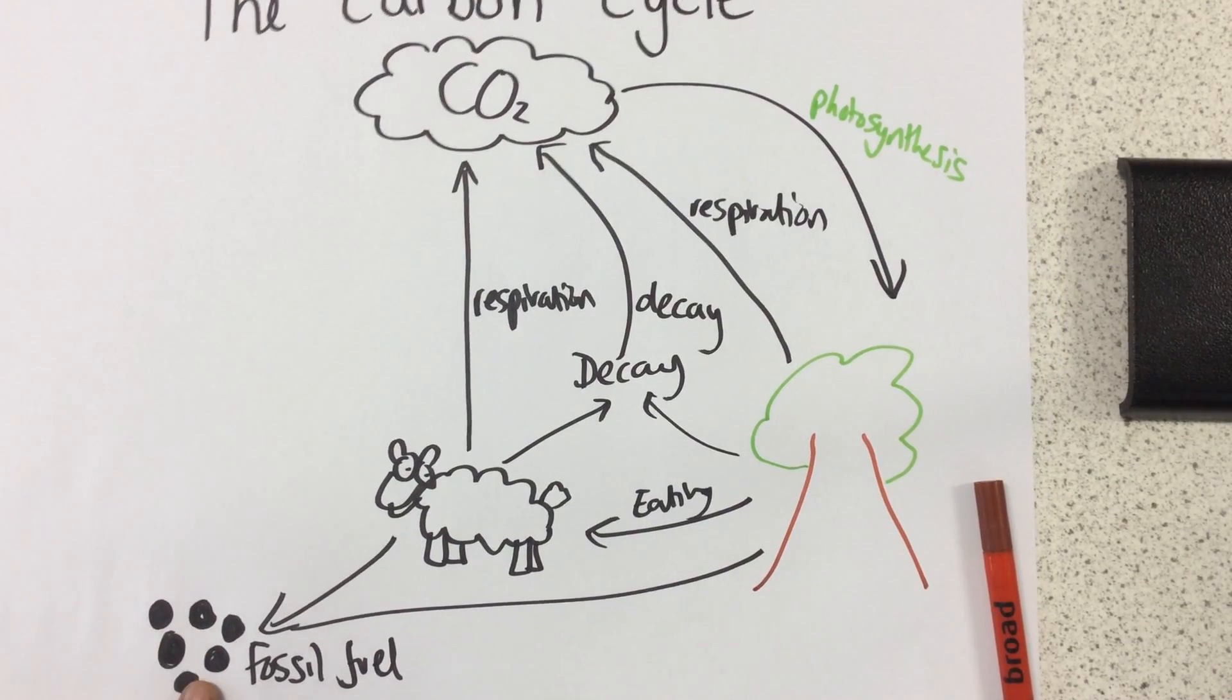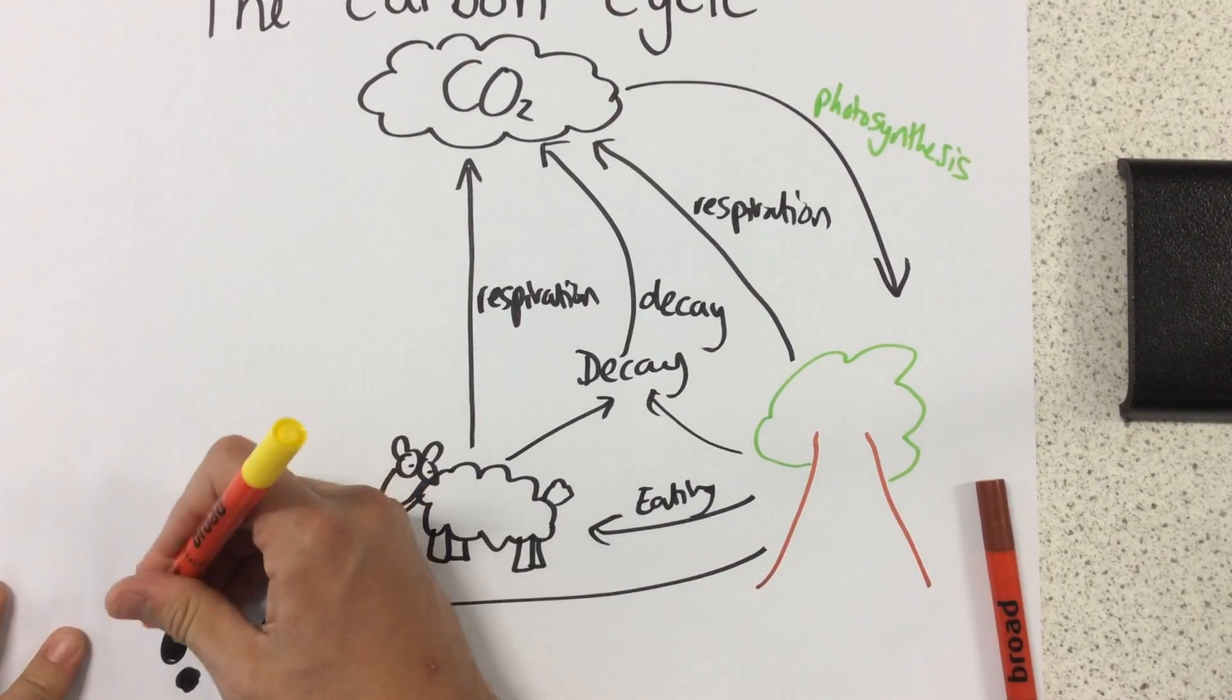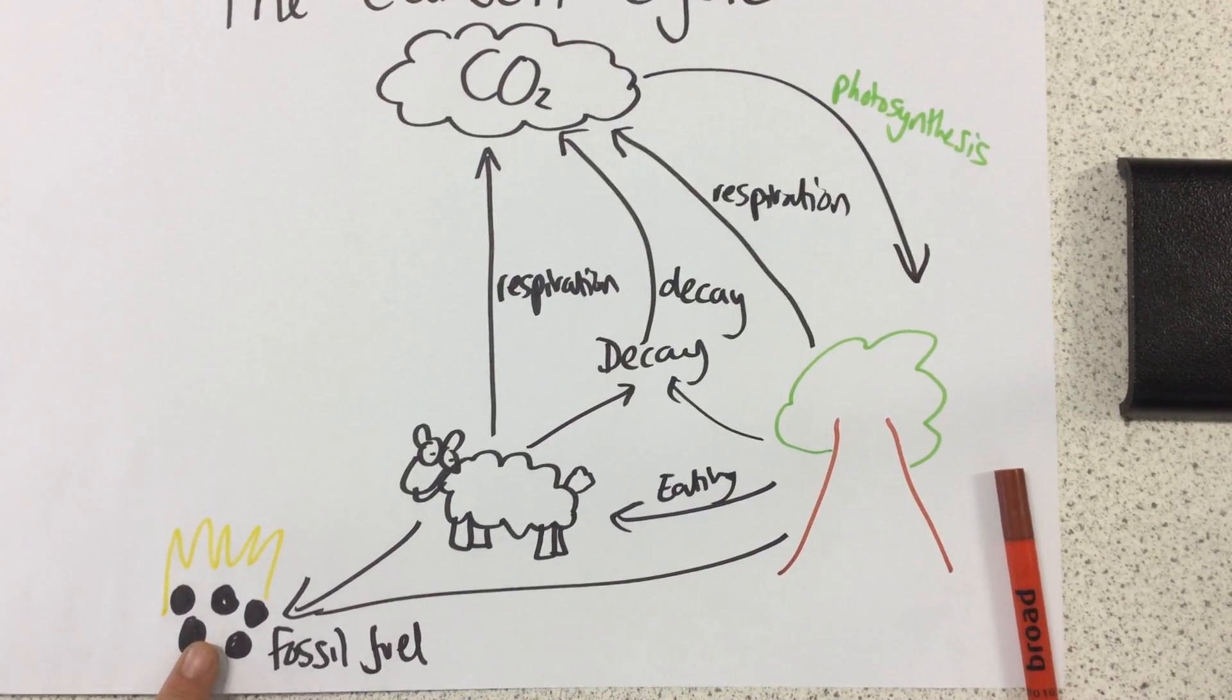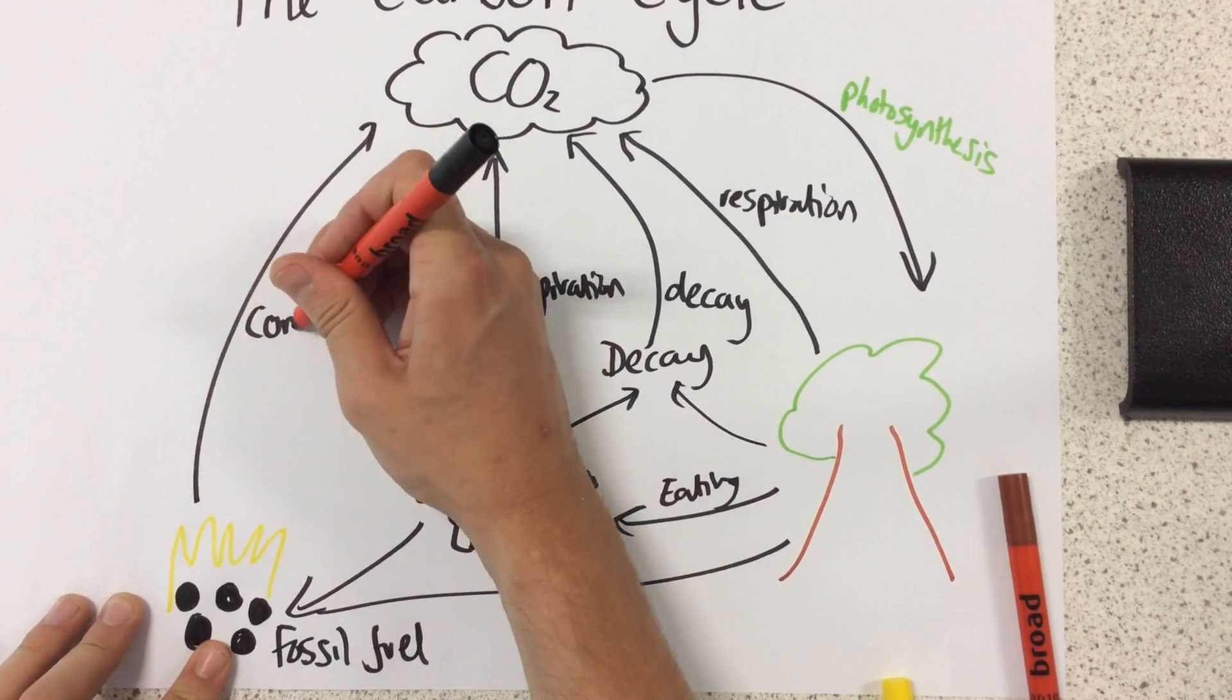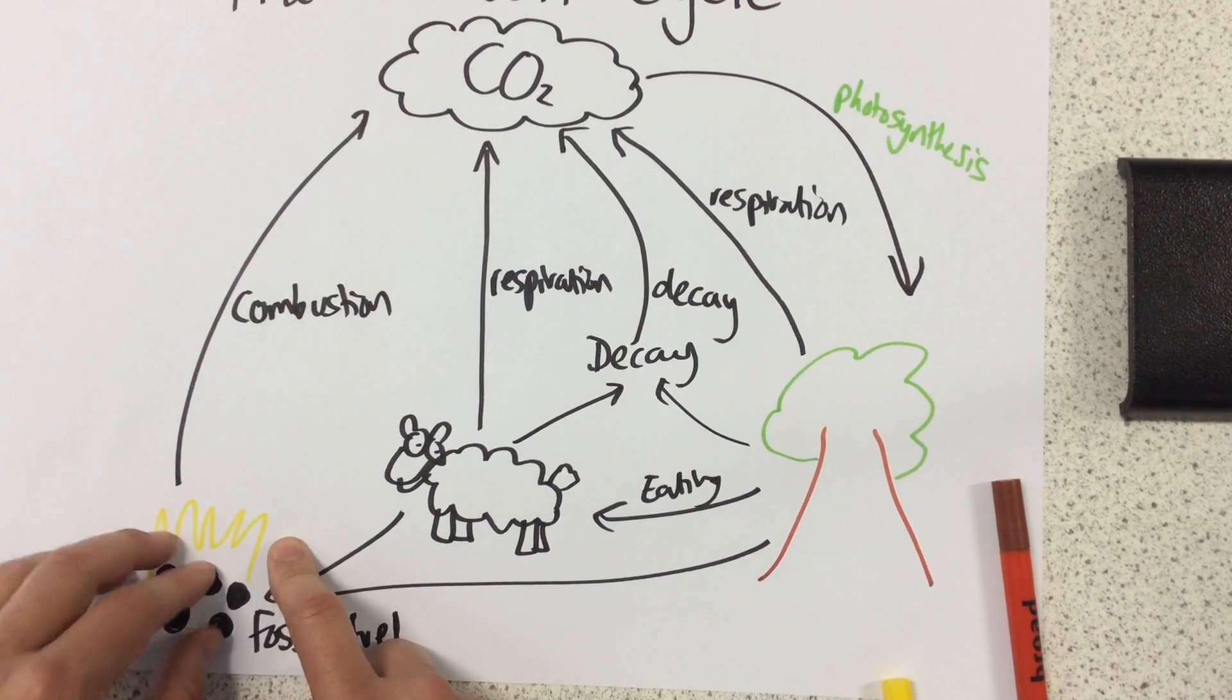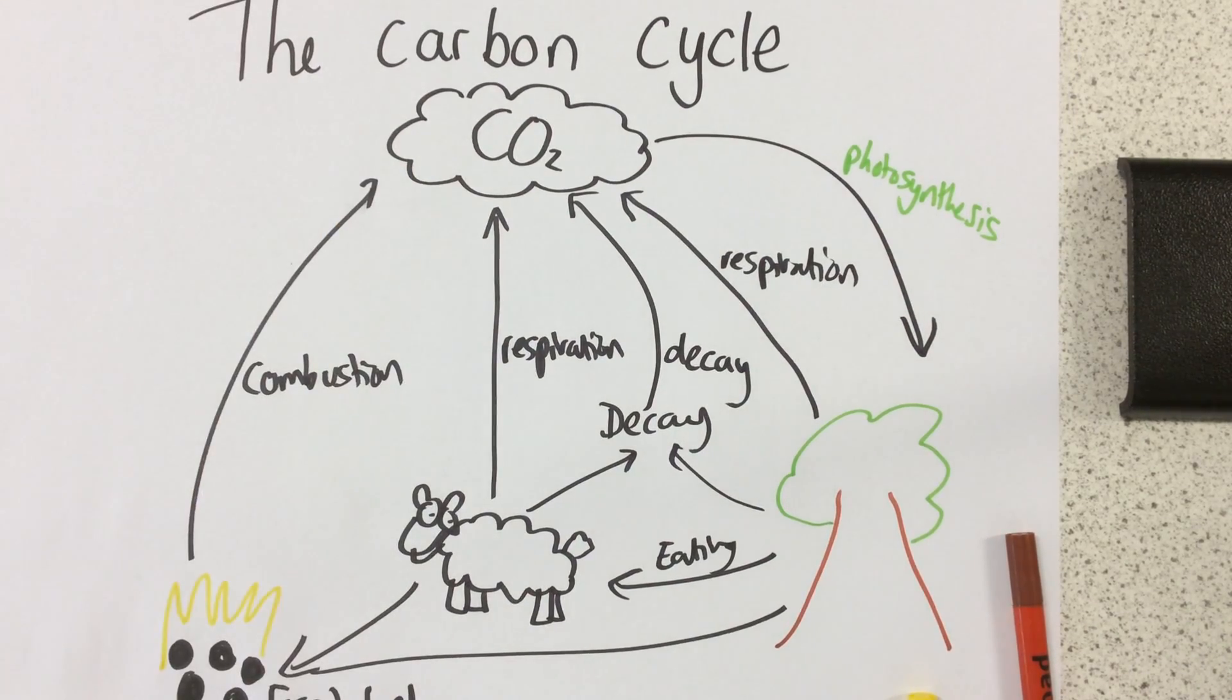Now what do we do with fossil fuels? Well, humans burn them. We burn them to release loads of energy, loads of chemical energy which is locked up inside them. So as we burn them, the scientific name for burning, remember, is combustion. As we burn them, the carbon dioxide is released from the fossil fuels and returned to the atmosphere.